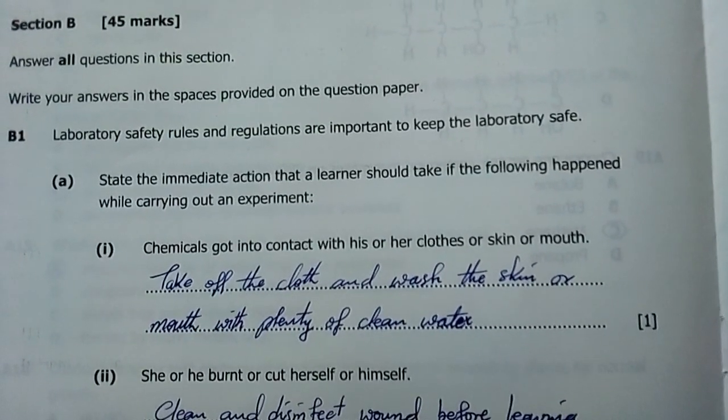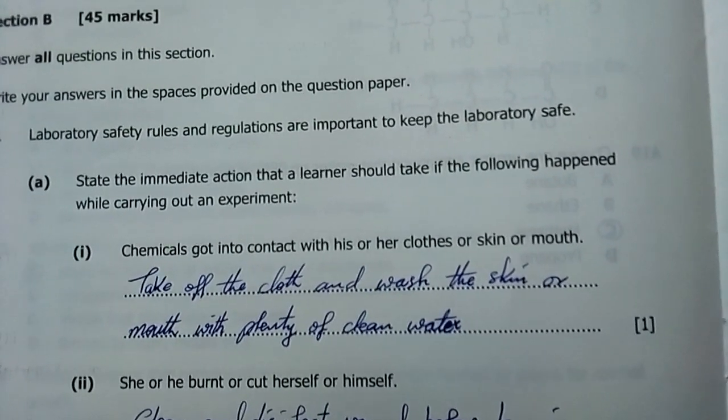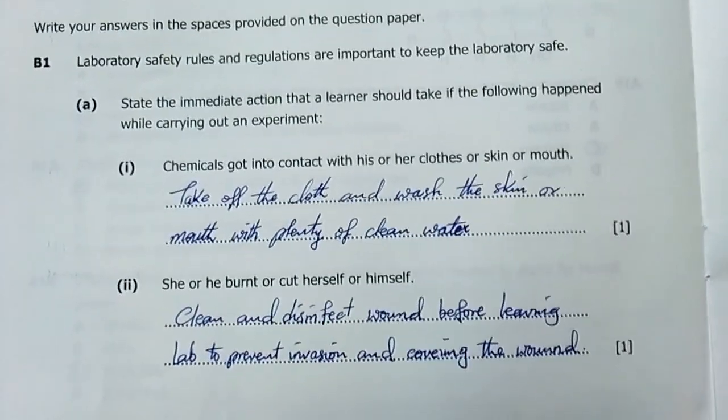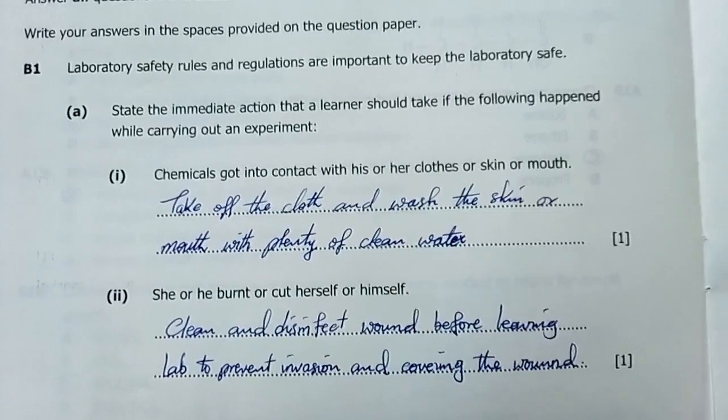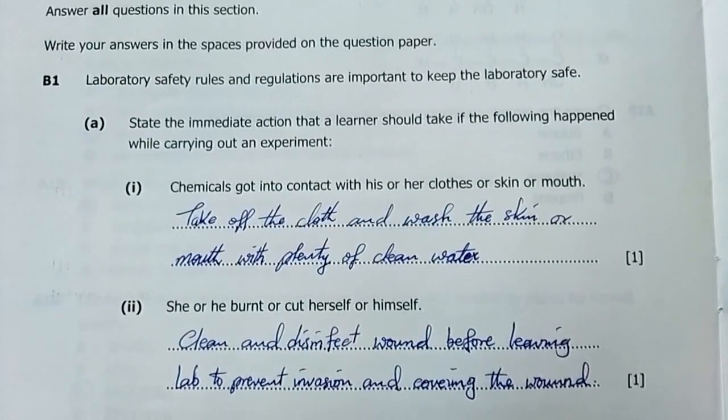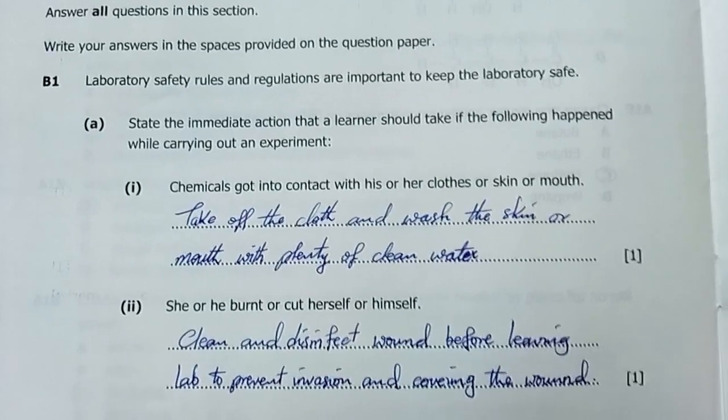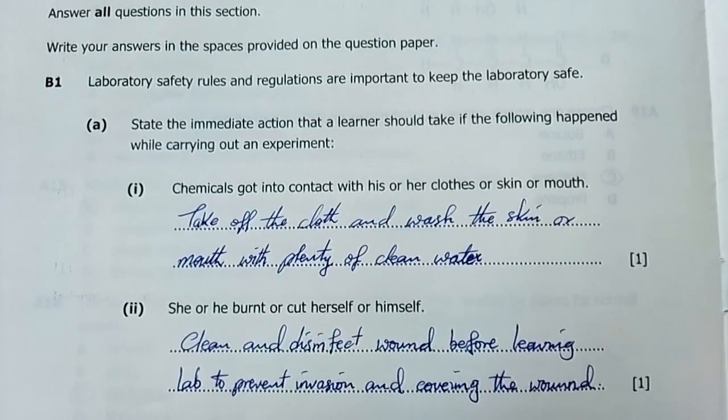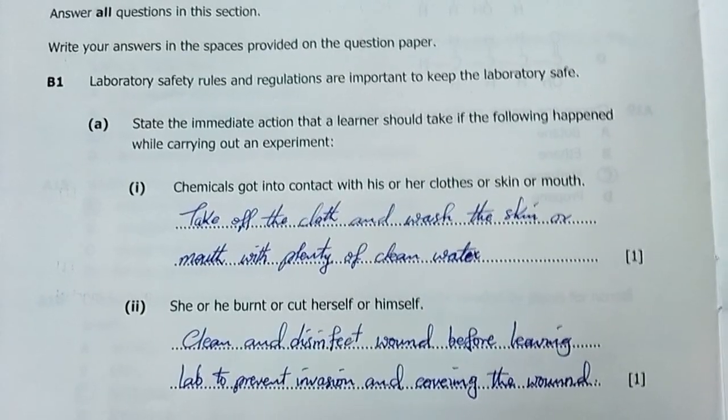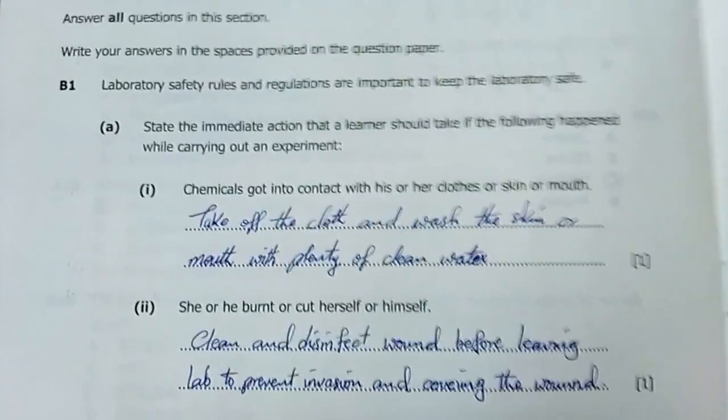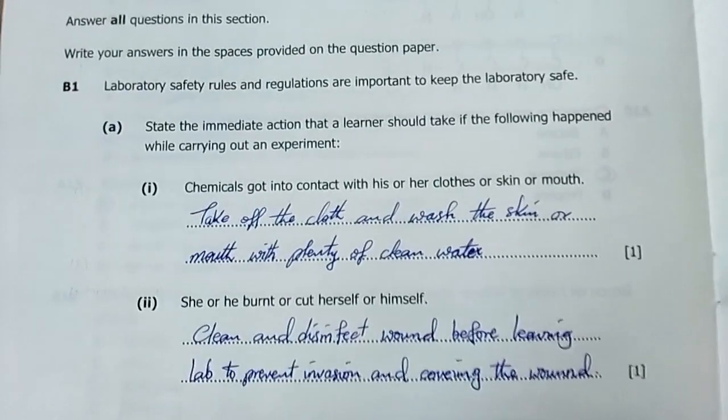Question 1: Laboratory safety rules and regulations are important to keep the laboratory safe. State the immediate action that a learner should take if the following happened while carrying out an experiment. These are first aid moves.